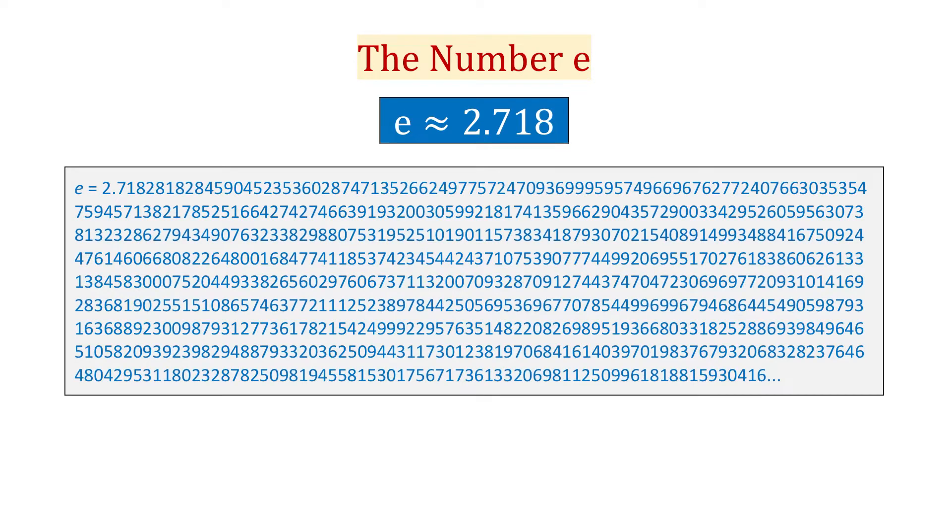In this video, we will see what precalculus teaches about number e. Number e is an irrational number whose value is approximately 2.718 and it is one of the most important constants in mathematics.